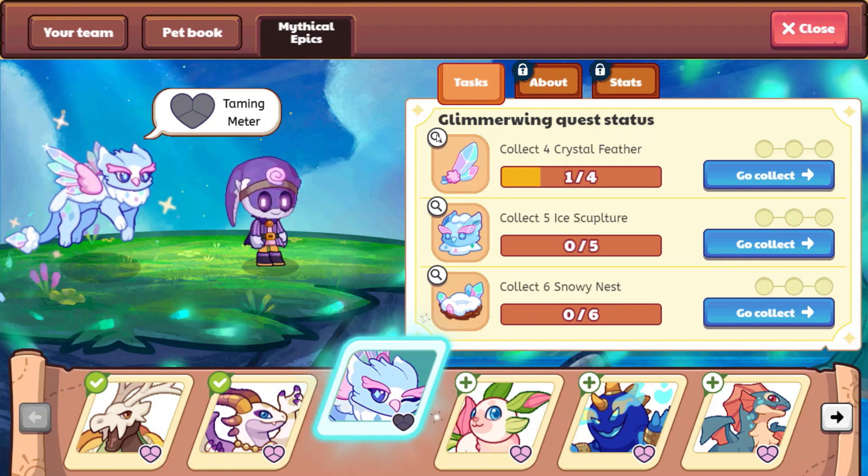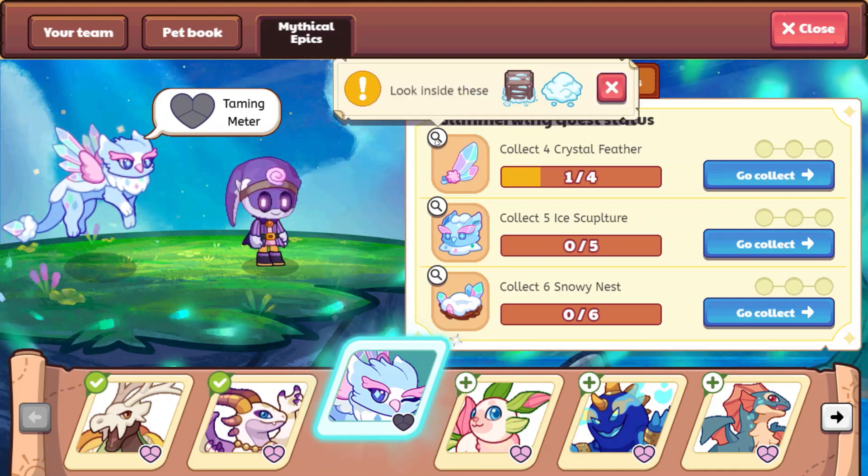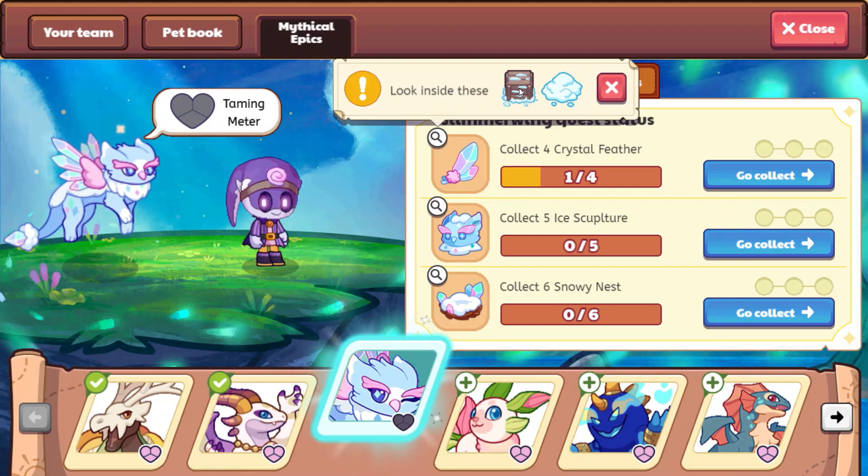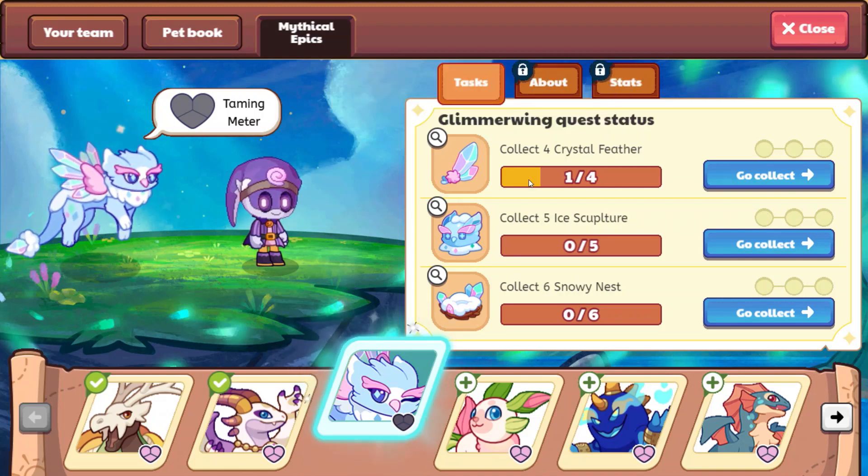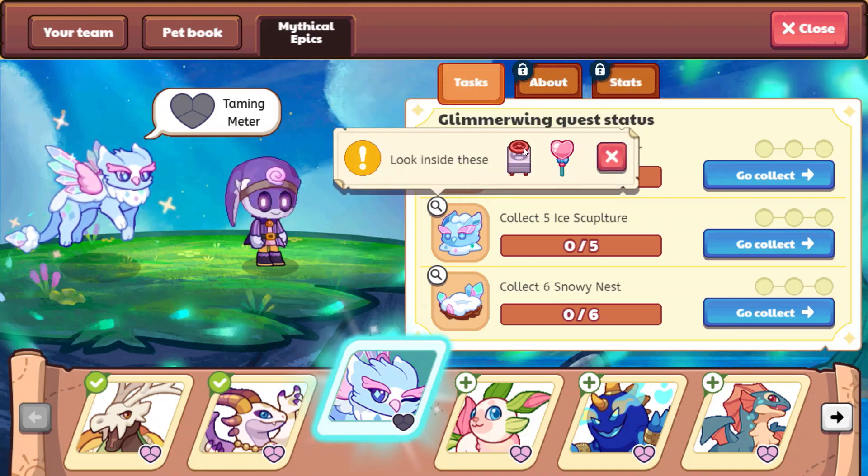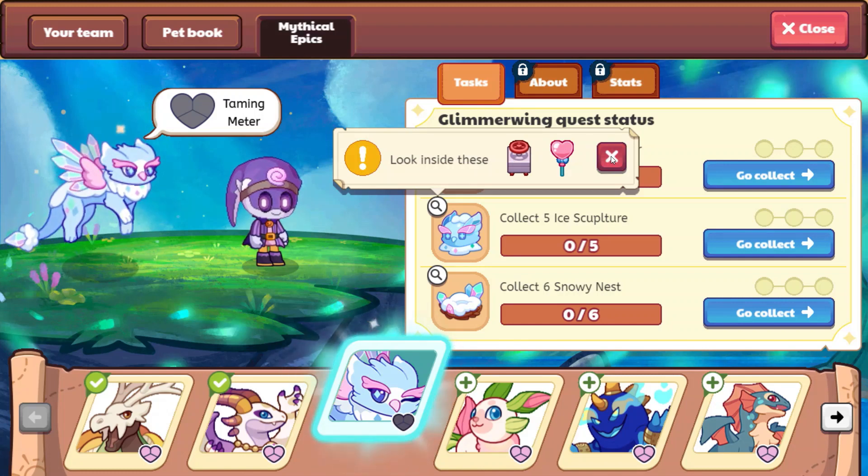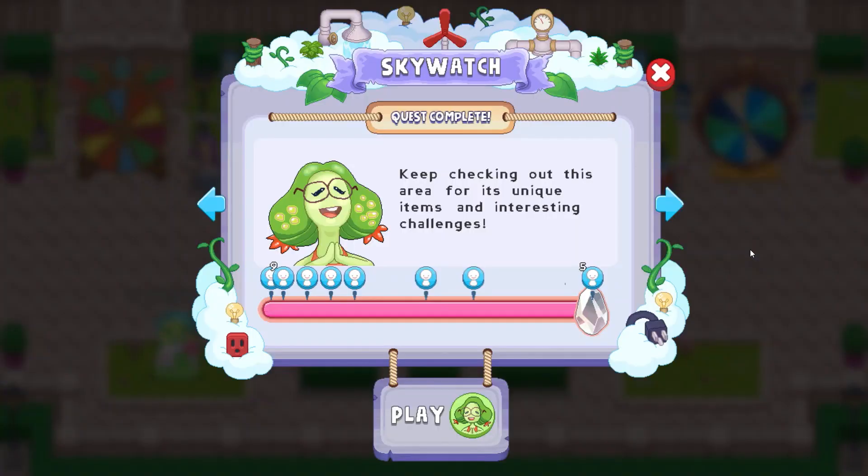Okay, so here in our quest status for the Crystal Feathers, we did not fare very well with our snow piles and snow crates in the Shiverchill Mountains. So we are going to be heading over to Skywatch today, and we are going to be looking for the balloons and then also the pressure valves. Hopefully getting five ice sculptures. So let's go ahead and head on over and see what we can get.